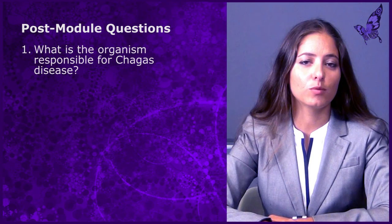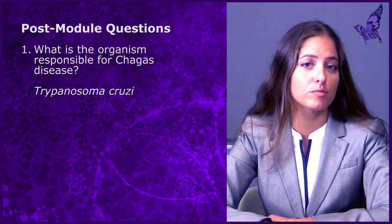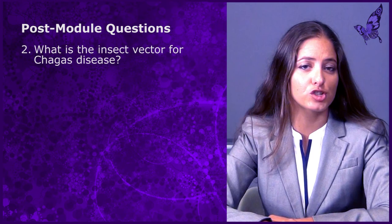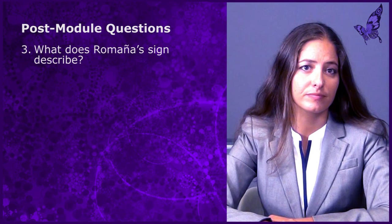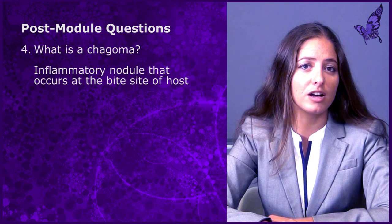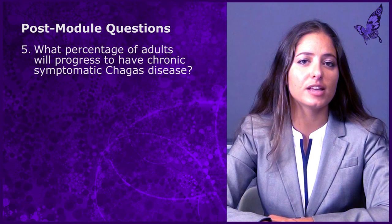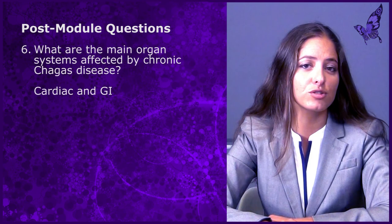It's time to go back over our questions from the beginning of the module. Question one: What is the organism responsible for Chagas disease? The answer is Trypanosoma cruzi. Question two: What is the insect vector for Chagas disease? The answer: the Reduviidae, or kissing bug. Question three: What does Romana's sign describe? The answer is unilateral periorbital edema. Question four: What is a Chagoma? A Chagoma is an inflammatory nodule that occurs at the bite site of the host. Question five: What percentage of adults will progress to have chronic symptomatic Chagas disease? The answer is thirty percent. Question six: What are the main organ systems affected by chronic Chagas disease? The answer is cardiac and gastrointestinal.